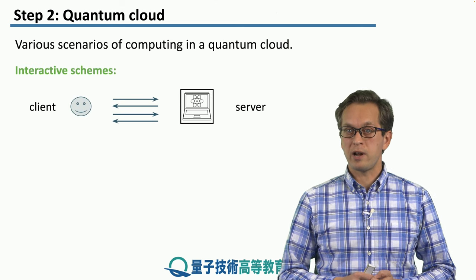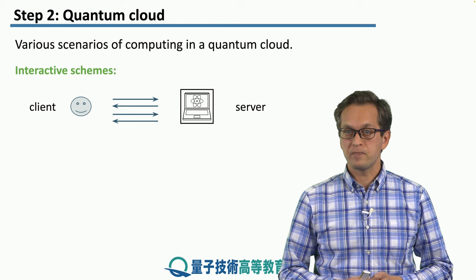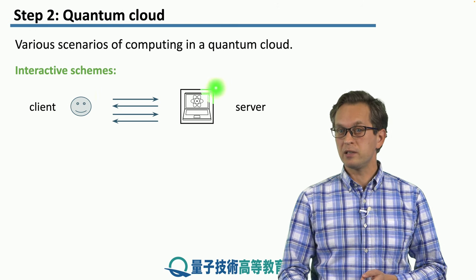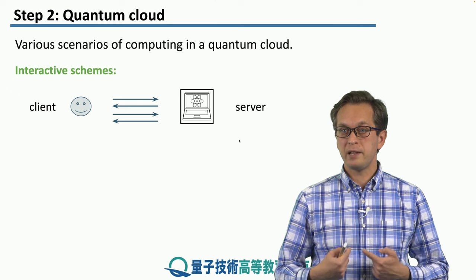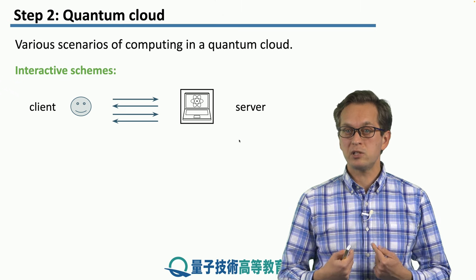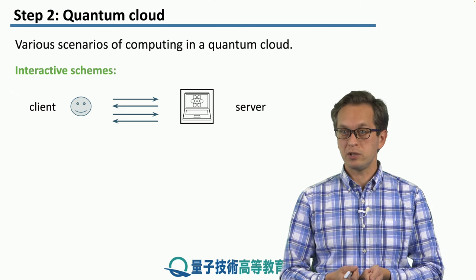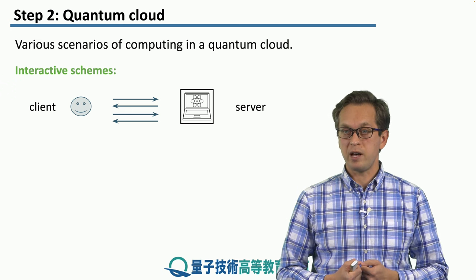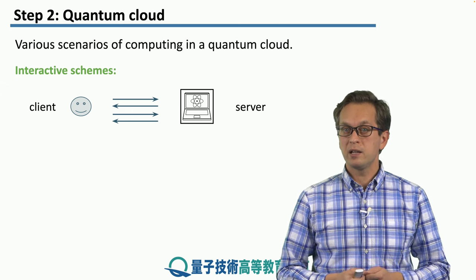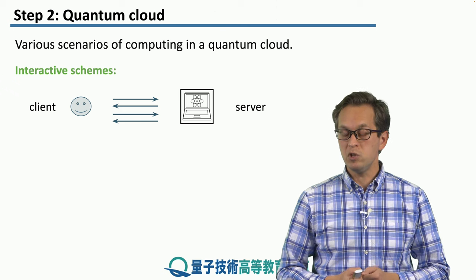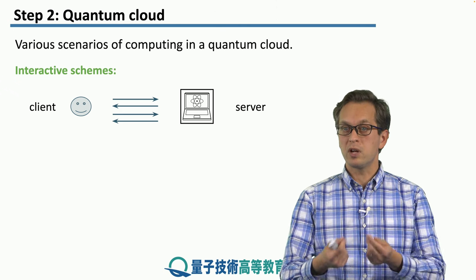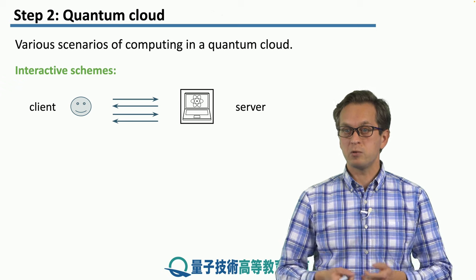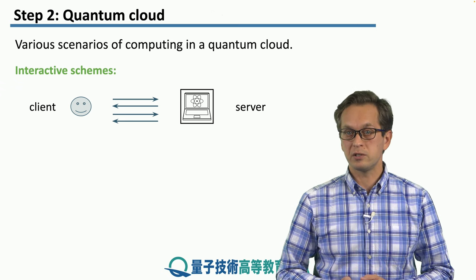We're going to consider interactive schemes. This is where the semi-classical client is interacting with a quantum server and it happens in rounds. In each round, the client sends some instructions to the quantum server and receives a reply back. Based on that reply, the client generates a new message and sends it to the server, which then replies with a new reply, and so on and so forth — it's an interactive session.